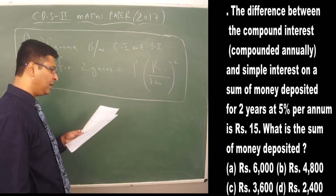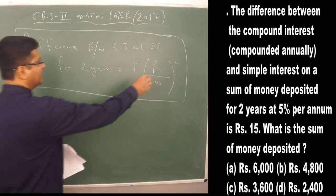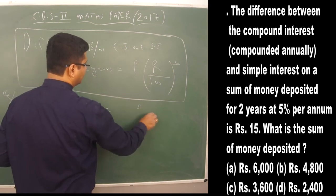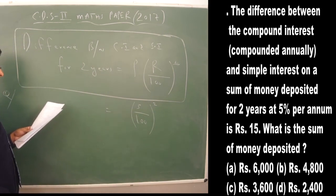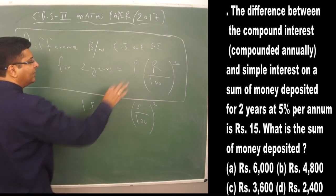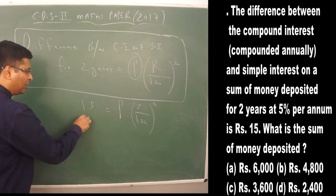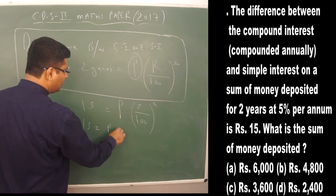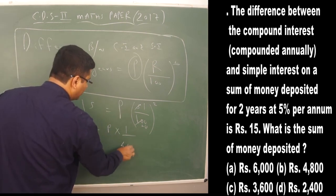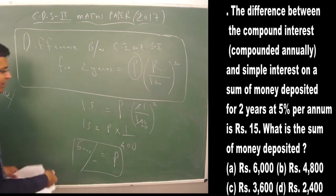The question states: the difference between CI and SI on a sum for 2 years at 5% rate is ₹15. Using the formula: 15 = P × (5/100)² = P × (1/20)² = P/400. Therefore P = 15 × 400 = ₹6000, which matches one of the options.